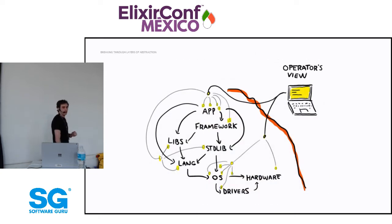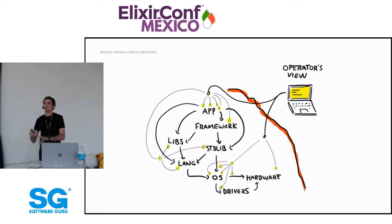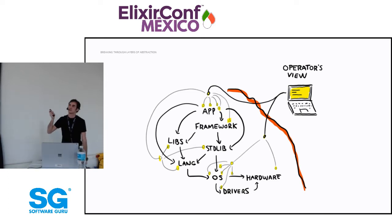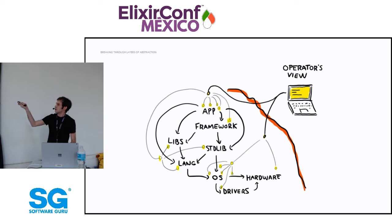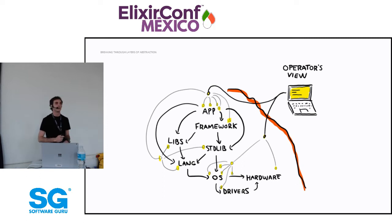Instead, we should look at the layers of abstractions in which we operate. Operators are never in direct contact with the system — it's only a partial view at any point in time. When we try to build a glass house or add logs, we usually do it all at the application layer. If I try through my application logs to make everything visible for the framework, the libraries, the standard library, the language, the operating system, the hardware, the drivers — it's a lost cause. You won't be able to provide visibility into all of that.